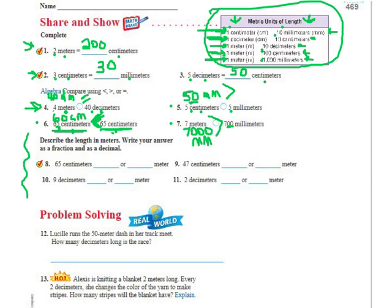Now this part asks us to write our answer describing the length in meters, so we're changing whatever it starts with into meters, and we have to write it as a fraction and a decimal. 65 centimeters changing to meters — I go backwards from centimeters to meters. I take the number in front of the centimeter, which is 65, and write it over 100. So it would be 65 over 100, or written as a decimal, 0.65.